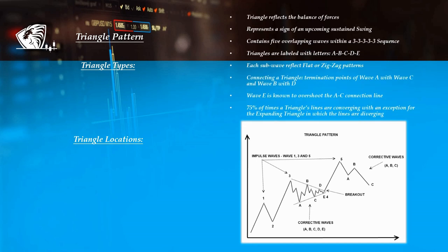A triangle reflects the balance of forces, this being the reason for its sideways movements and decreasing volumes or volatility during its shelf life. A triangle is also a sign of a sustained swing which is awaiting its turn. It contains 5 overlapping waves which subdivide as a 3-3-3-3-3 structure and are labeled as A-B-C-D-E, which in turn subdivide as zigzags or flats. A triangle is noticeable by connecting the termination points of wave A with C and B with D, with wave E well known to overshoot the AC connection line. Most of the times its lines are converging, except for the expanding triangle where the lines are diverging.